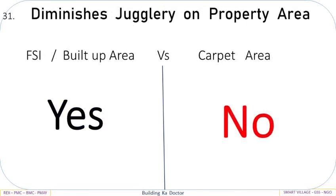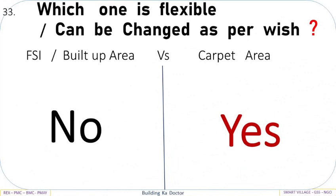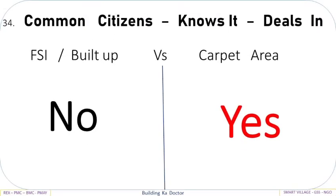Diminishes jugglery on property area — FSI Built-Up Area: Yes, vs Carpet Area: No. Maintains transparency among all agencies — FSI Built-Up: Yes, vs Carpet Area: No. Which one is flexible and can be changed as per wish? FSI Built-Up Area: No, vs Carpet Area: Yes. Common citizens know it and deal in — FSI Built-Up: No, vs Carpet Area: Yes.